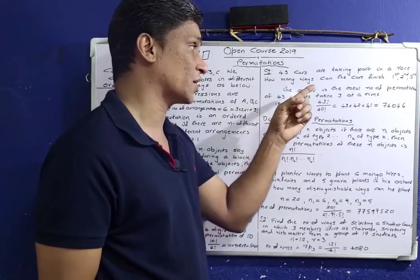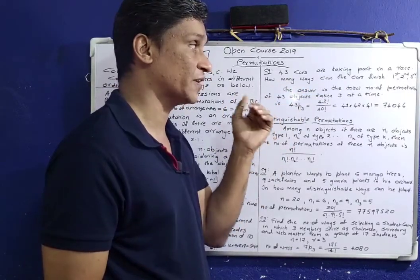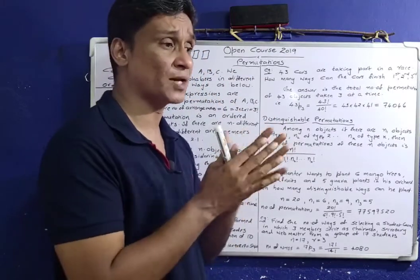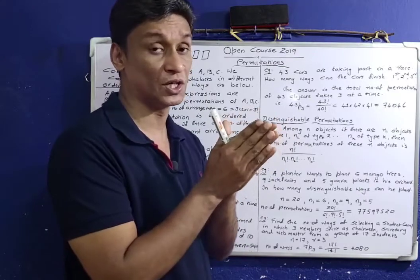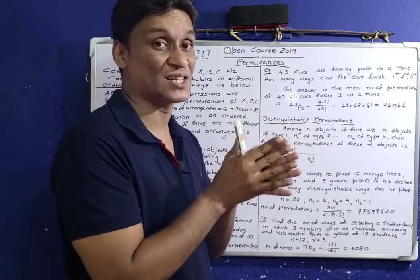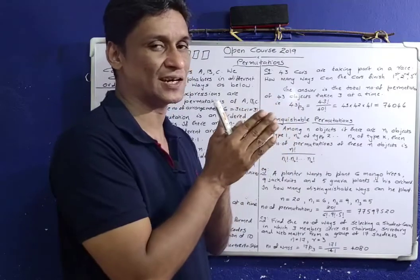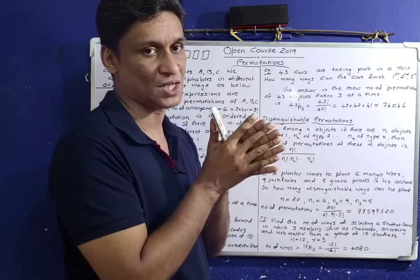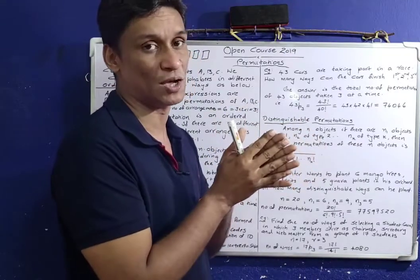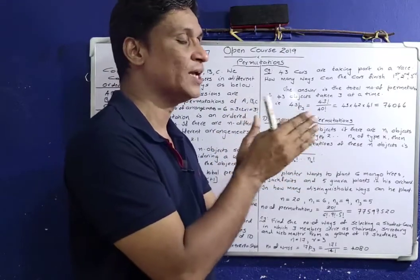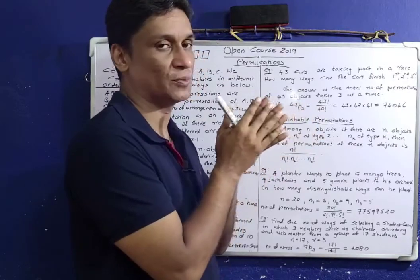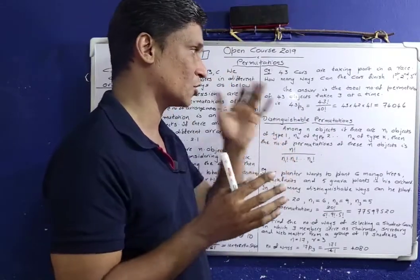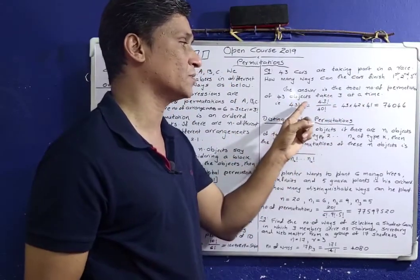43 cars are taking part in a race. How many ways can the cars finish 1st, 2nd and 3rd? Any arrangement of 1st, 2nd, and 3rd. How many arrangements are possible? The answer is the total number of permutations of 43 objects taken 3 at a time.